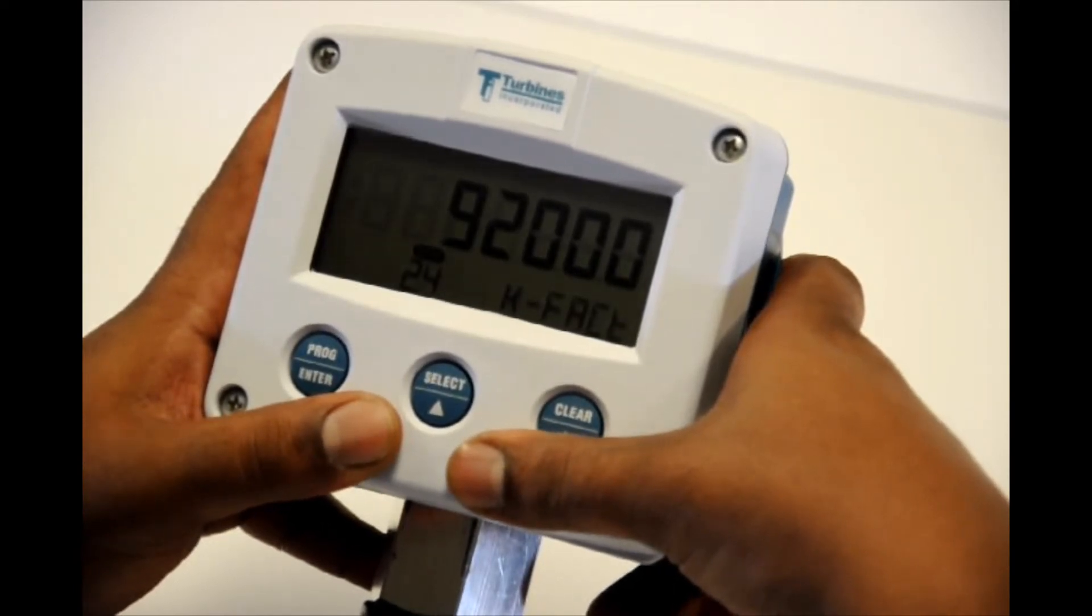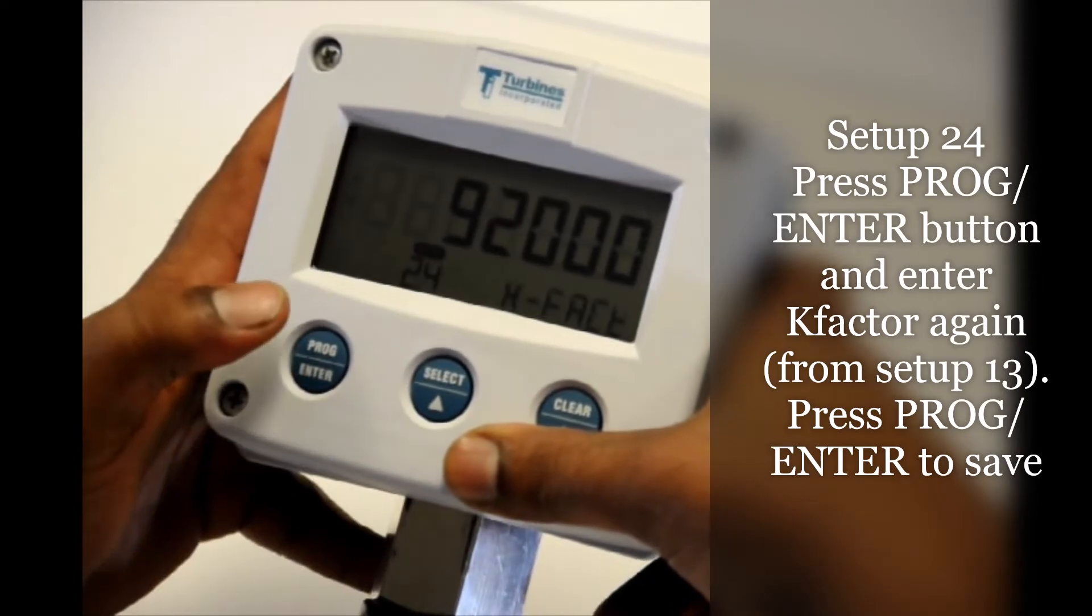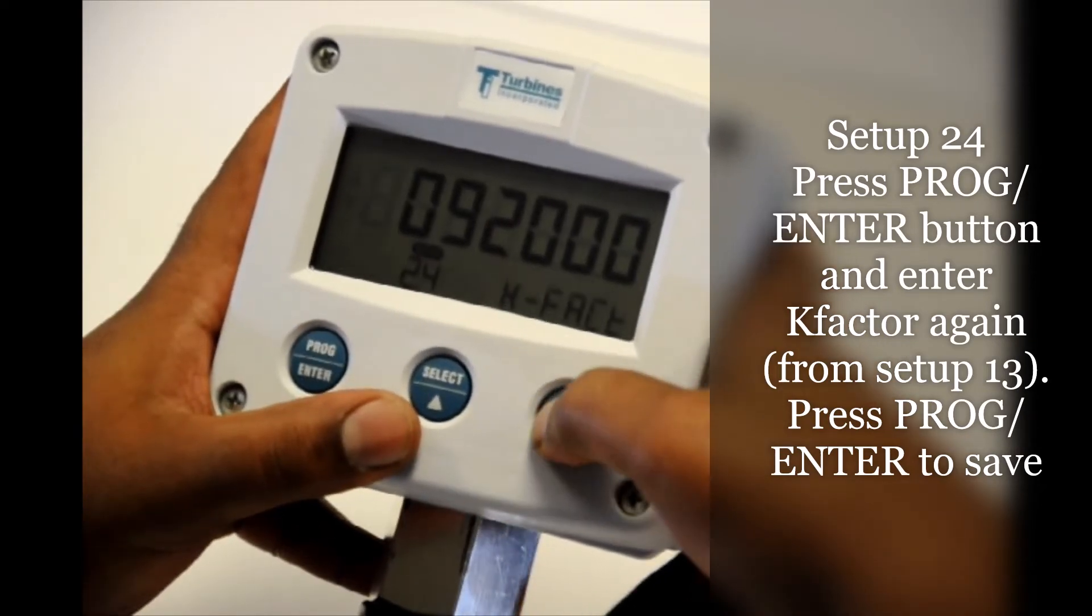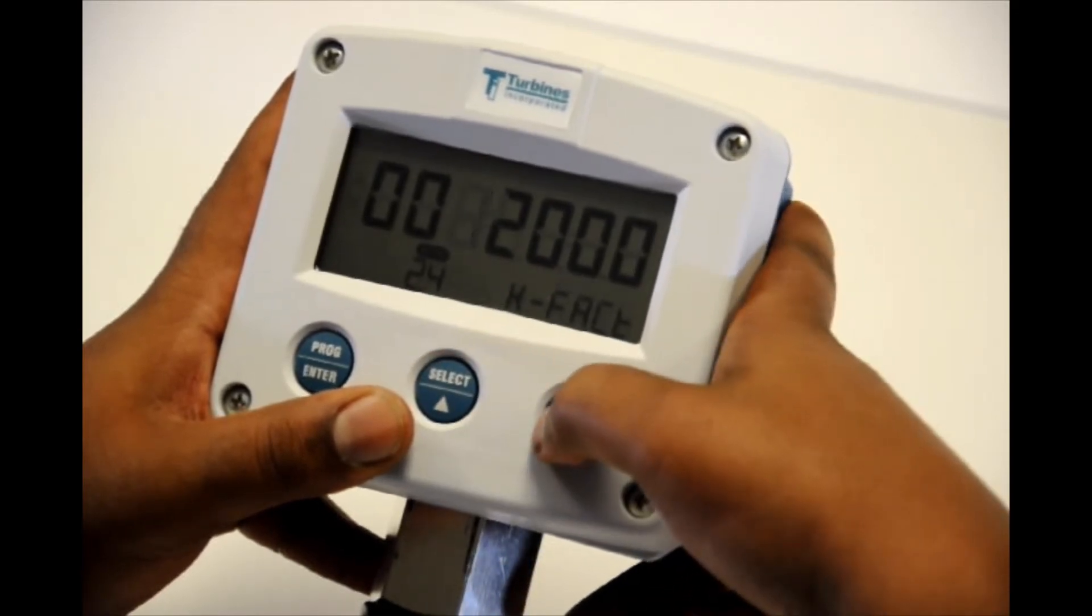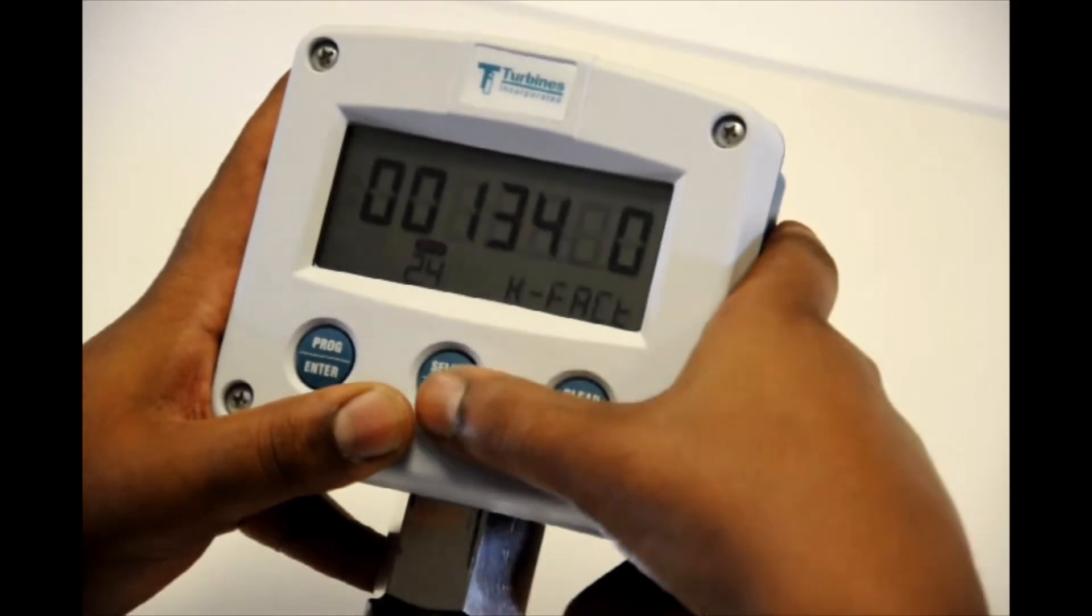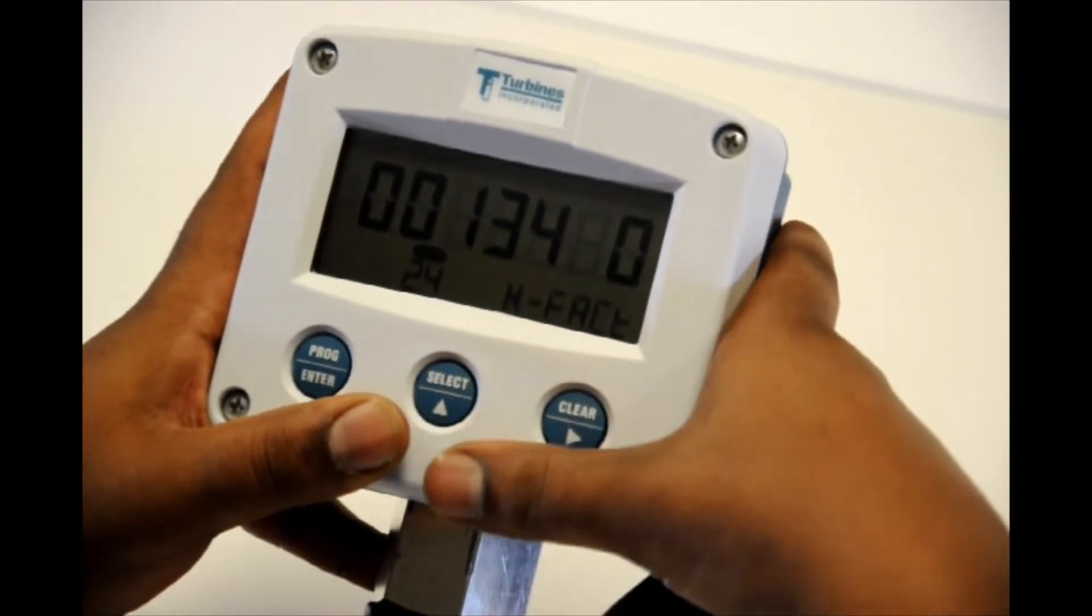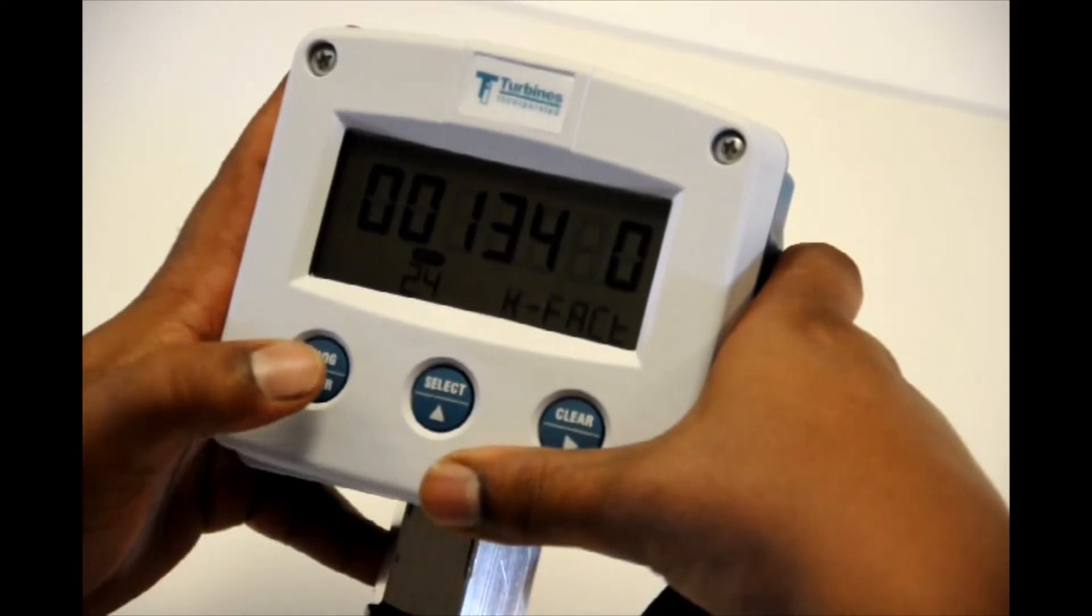So the same thing we did for one three we're going to do for two four. So you're going to enter your K factor here by hitting program enter. Clear to our third numeral. Use select. Change that first one to a one. Next number will be three. Four. And the last number will be four. So thirteen four forty. Once you have a K factor in there hit program enter. Lock it in.